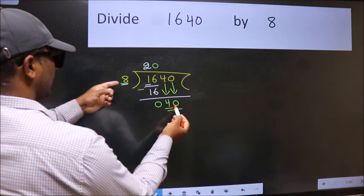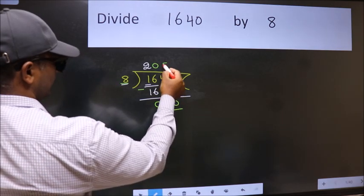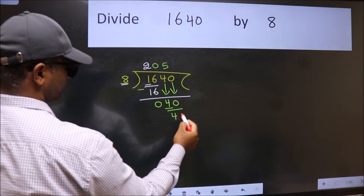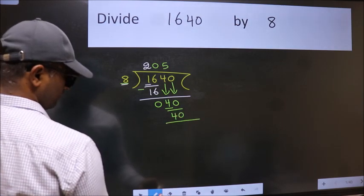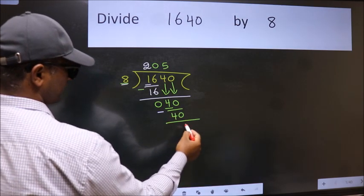When do we get 40 in 8 table? 8 fives 40. Now we subtract. We get 0.